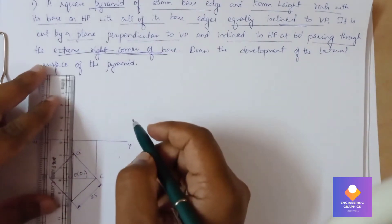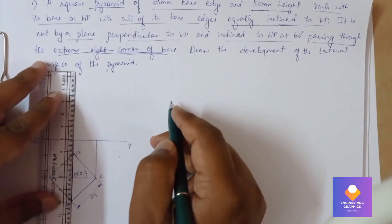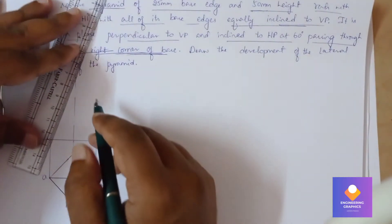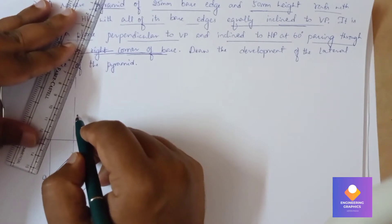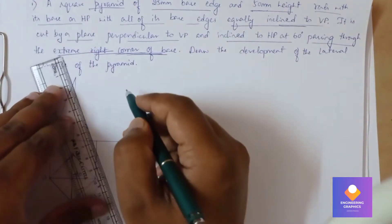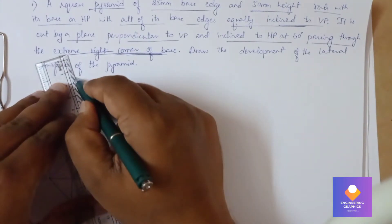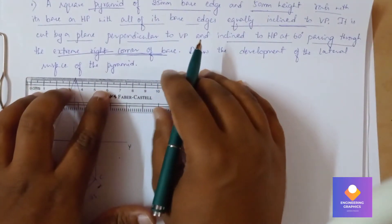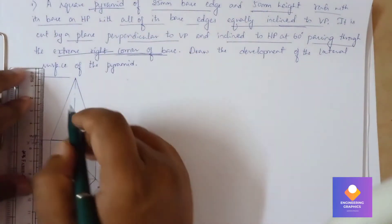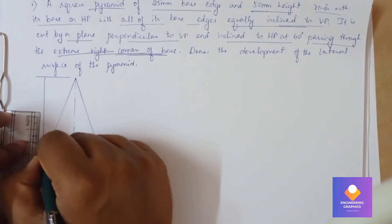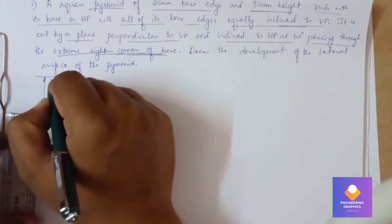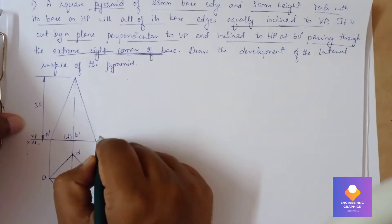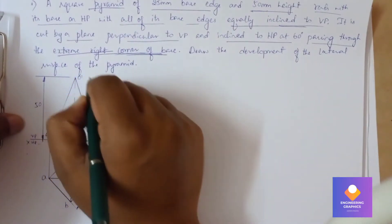The axis length is 50mm, so draw a vertical line or axis of 50mm. Now you can join the slant edges to complete the front view. Show the dimension of 50mm.